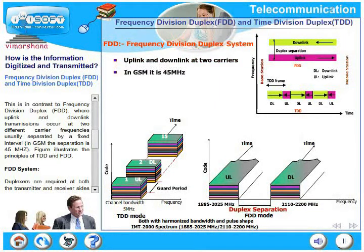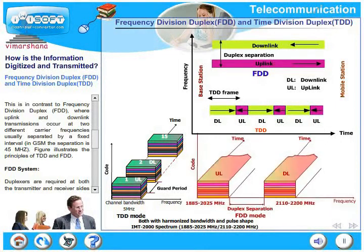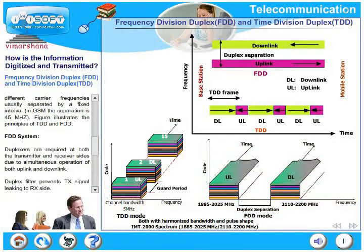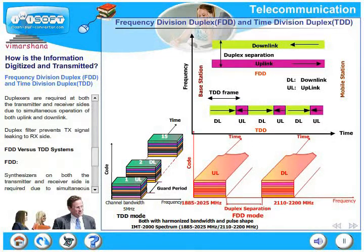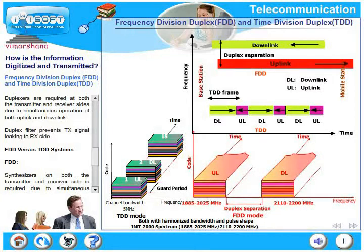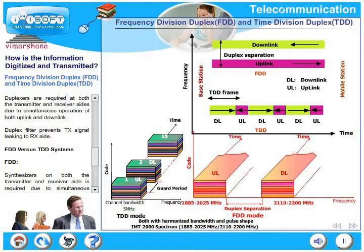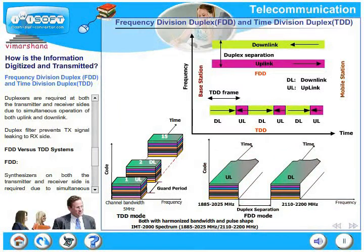In GSM, the separation is 45 MHz. The figures illustrate the principles of TDD and FDD clearly. In FDD systems, duplexers are required at both the transmitter and receiver ends due to simultaneous operation of both uplink and downlink. A duplex filter prevents the TX signal from leaking into the RX side.